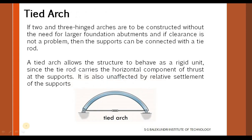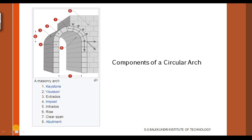We also have a tied arch. If two- and three-hinged arches are to be constructed without the need for large foundation abutments, and if clearance is not a problem, then the supports can be connected with a tie rod, as you can see here. The main components of the arch are: the crown at the top, the abutments at the supports, the extrados on the outer surface, the intrados on the inner surface, and the rise — the distance from the springline up to the crown.